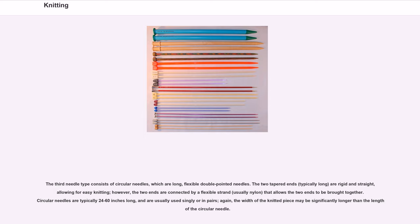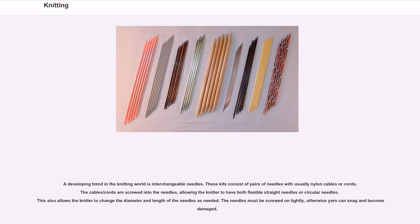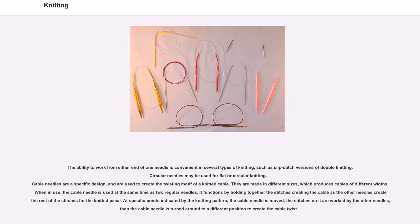A developing trend in the knitting world is interchangeable needles. These kits consist of pairs of needles with usually nylon cables or cords. The cables/cords are screwed into the needles, allowing the knitter to have both flexible straight needles or circular needles, and to change the diameter and length of the needles as needed. The needles must be screwed on tightly; otherwise yarn can snag and become damaged. The ability to work from either end of one needle is convenient in several types of knitting, such as slip stitch versions of double knitting.